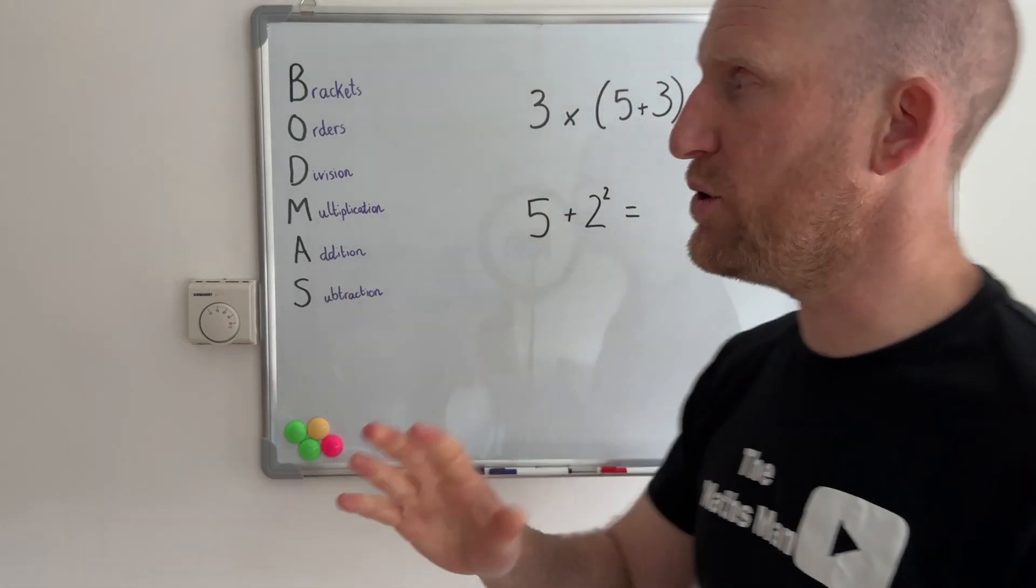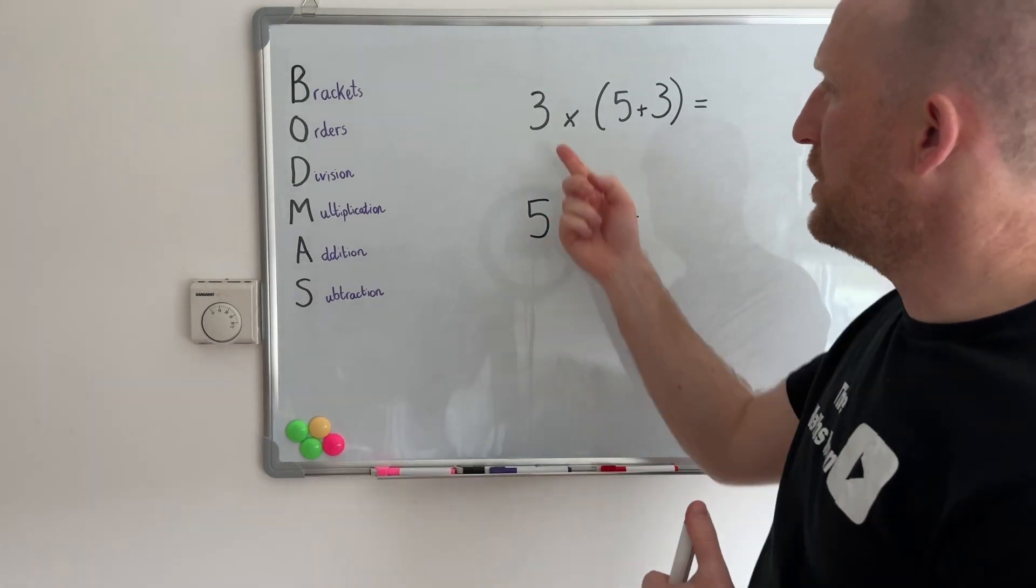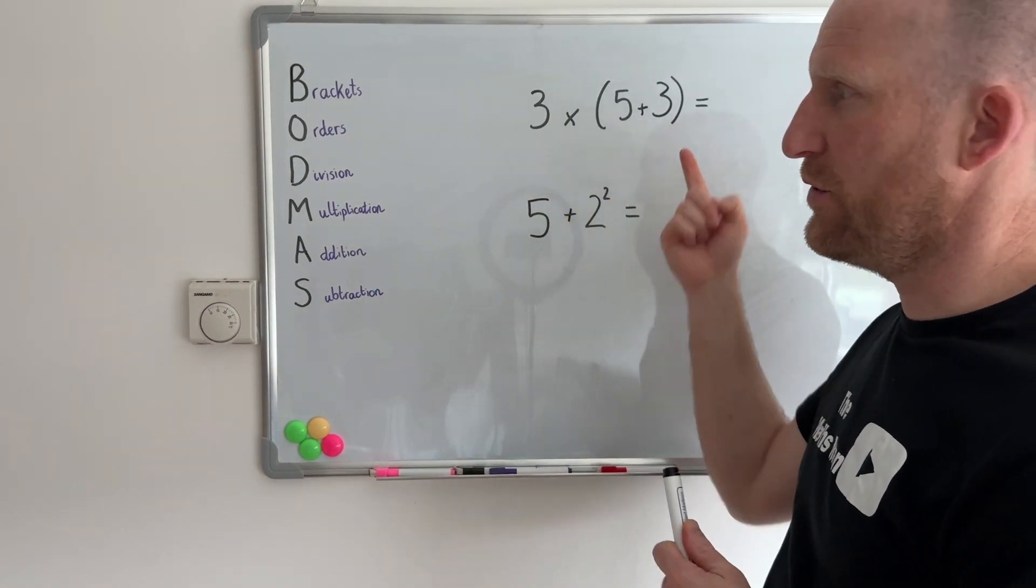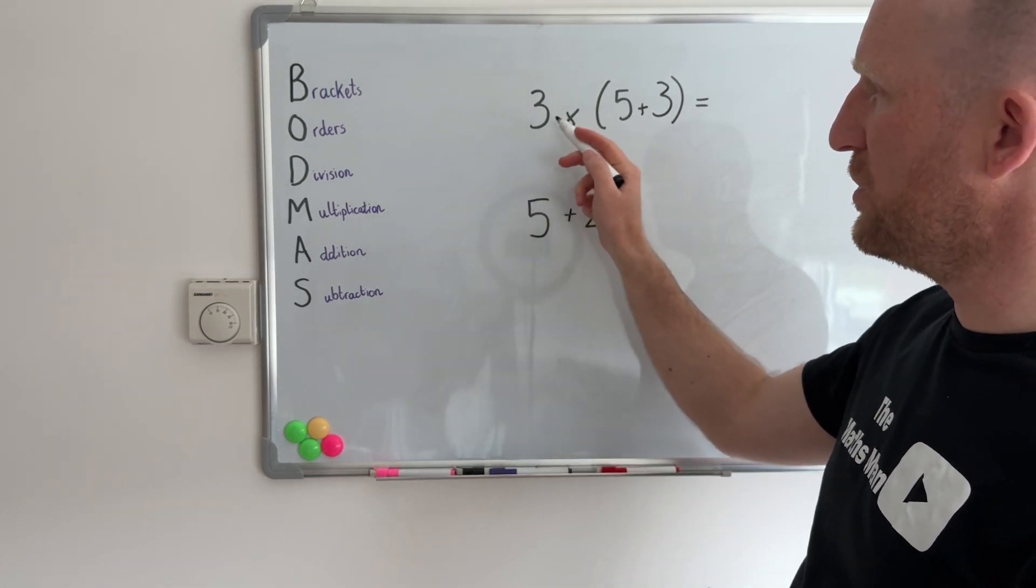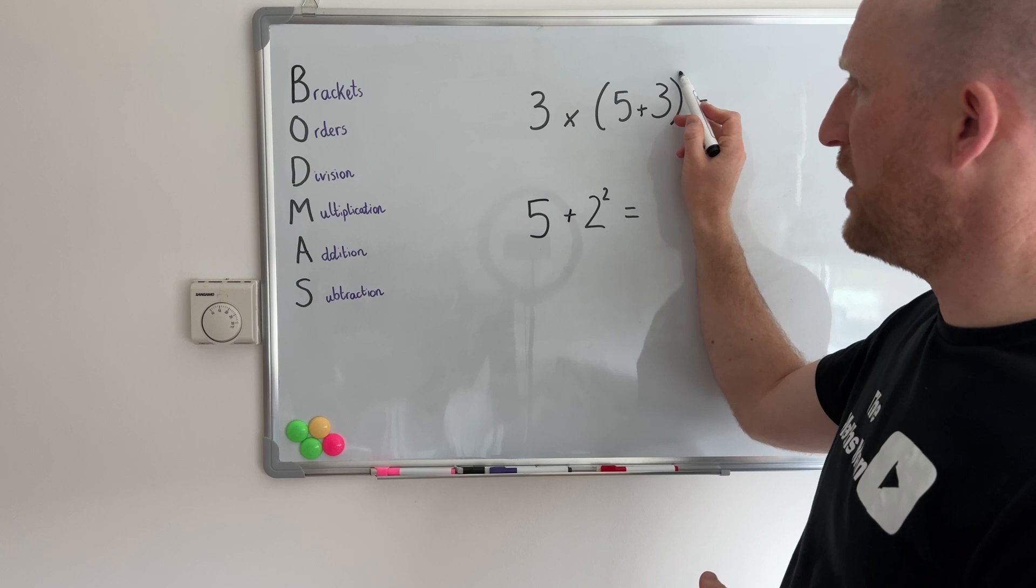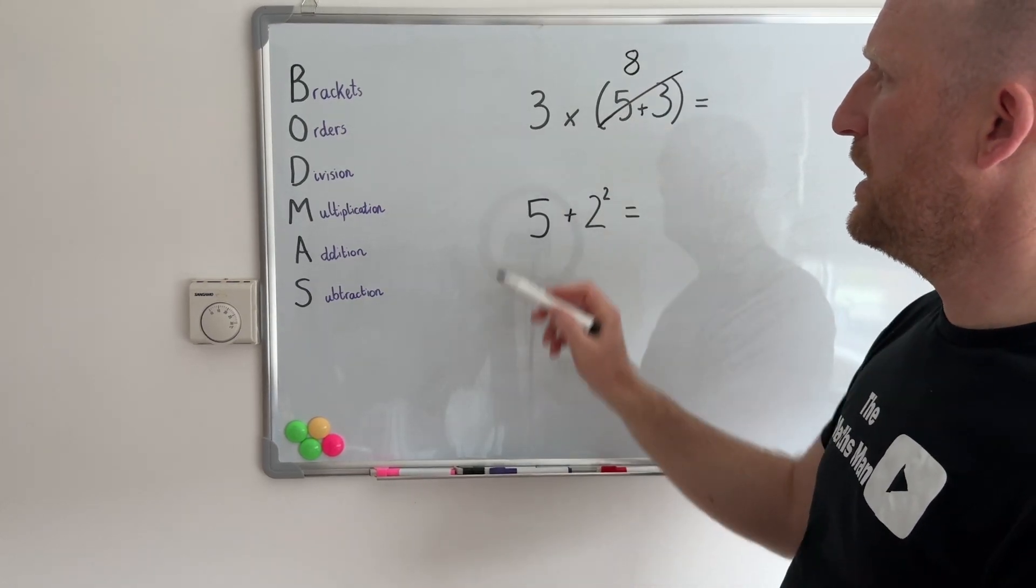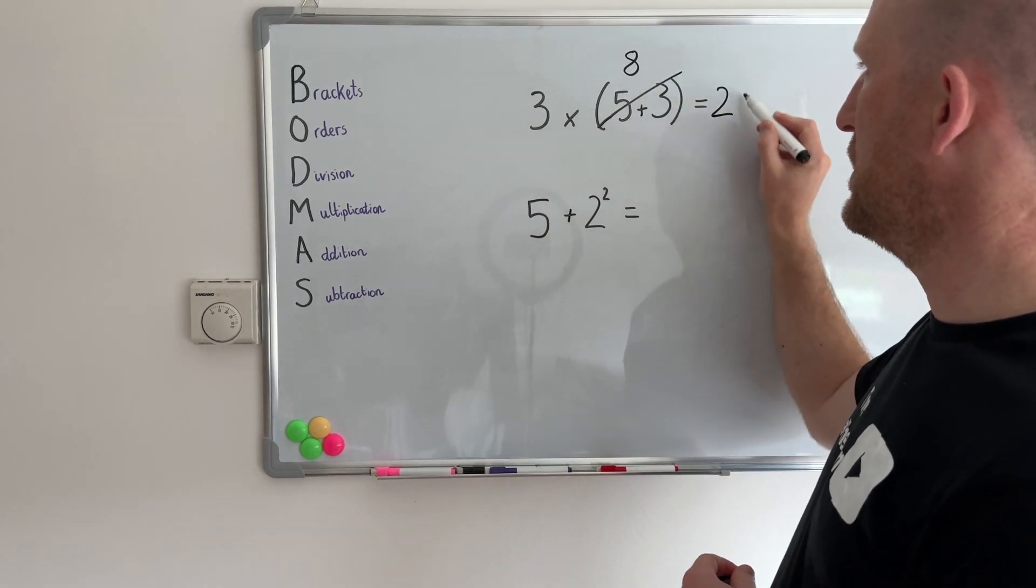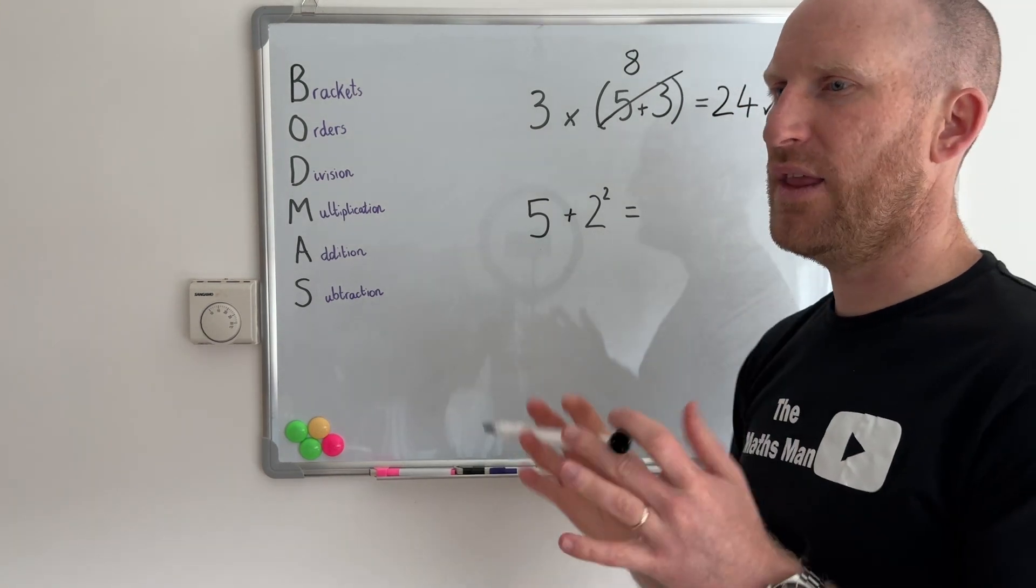Okay so let's have a look at these two examples which explain what B and O mean. So in this example we have 3 multiplied by (5 plus 3). So because of BODMAS I'm not going to do the multiplication first, I'm going to do the brackets part first. So 5 plus 3 is 8 and then it's just a simple case of 3 times 8 is 24. I'm pretty sure most people would have done that anyway.